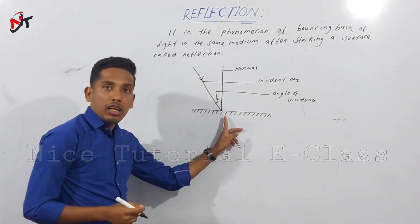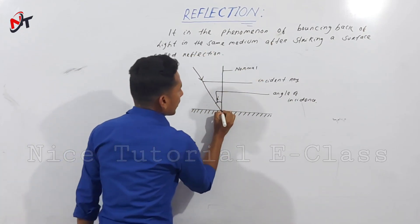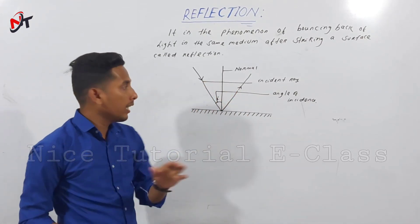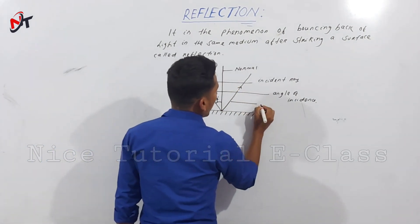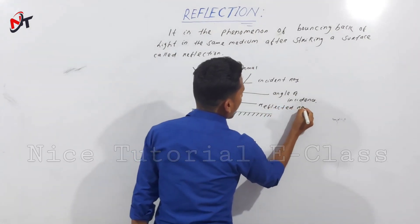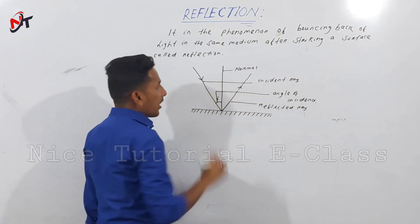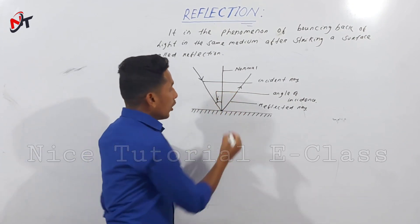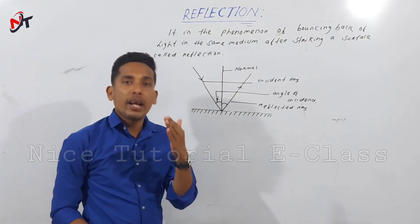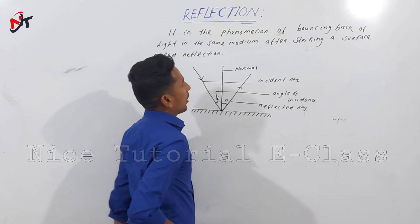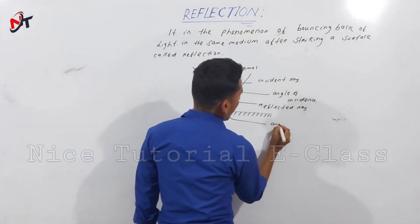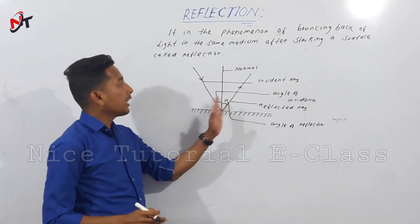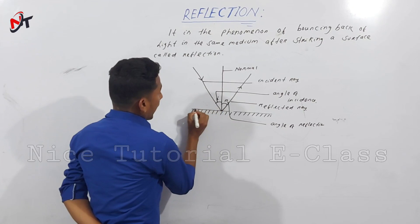If you see the angle of incidence, the incident ray is reflected back in the same medium. The incident ray and the reflected ray — the angle that the reflected ray creates with the normal is called the angle of reflection, and it is denoted as small r.